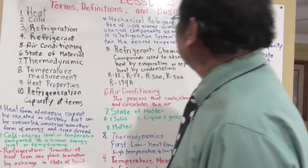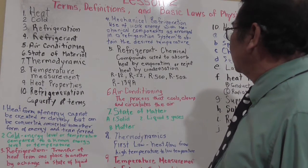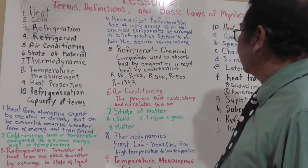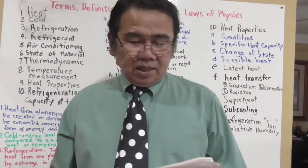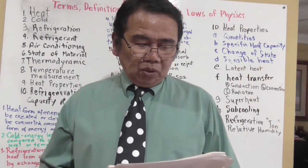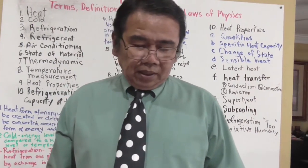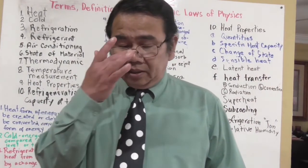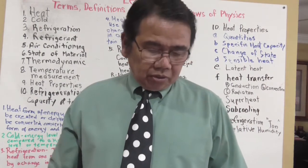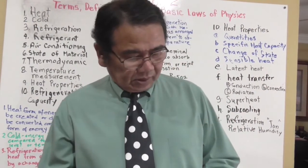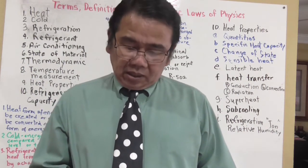A refrigerant is the chemical component used to absorb heat by evaporation or reject heat by condensation. The types of refrigerants we have include R12, R22, R500, R502, and R134a. These refrigerants will be discussed in greater detail in a later module or lesson. Many different refrigerants are used, and the selection of a particular refrigerant depends on the system and the conditions it will be operated under.